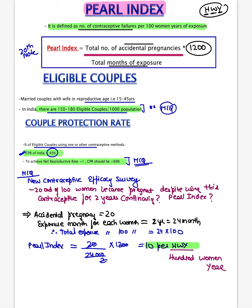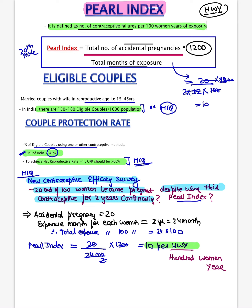Here is a question: a new contraceptive is in the market; 20 out of 100 women become pregnant despite using it for two years continuously. What is the Pearl Index? Total accidental pregnancies = 20. Total months of exposure = 2 years × 12 months × 100 women = 2400. Pearl Index = 20/2400 × 1200 = 10. This means 10 women per hundred per year get pregnant — that is the Pearl Index.